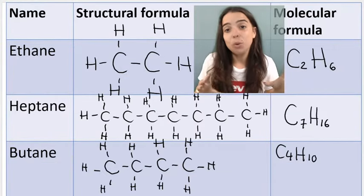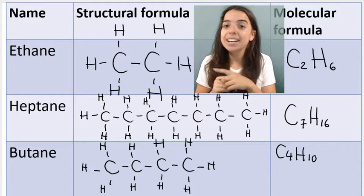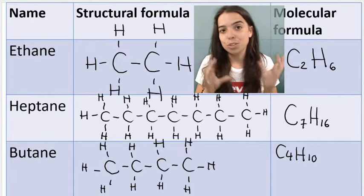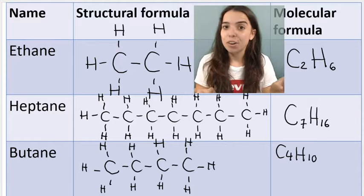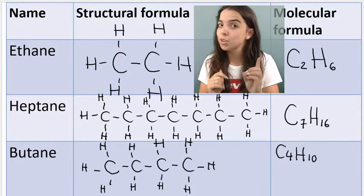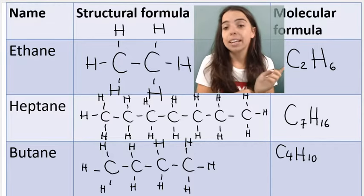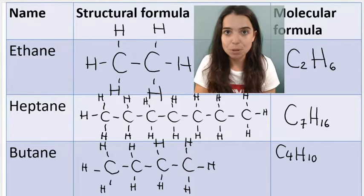Here we can see a few examples in my table. I've got ethane over here and this is the molecular formula of ethane. We did discuss molecular versus structural formula in a previous video of mine. So check that out if you're a bit confused. Then below me you can see heptane with seven carbons and again the molecular formula over there and then butane.